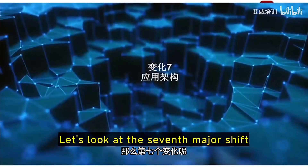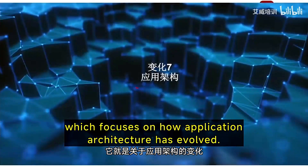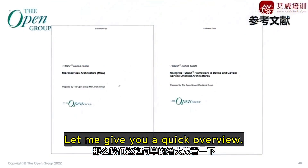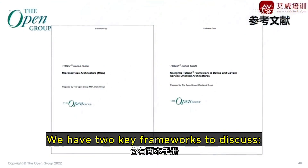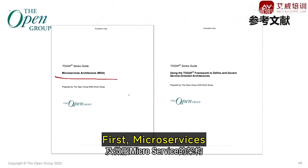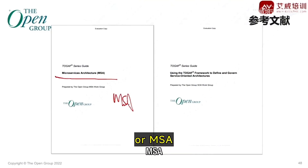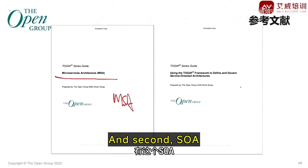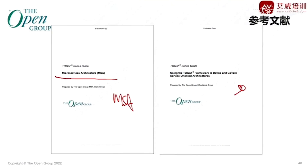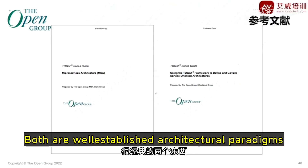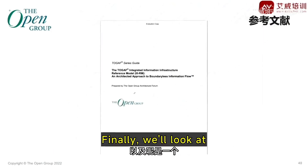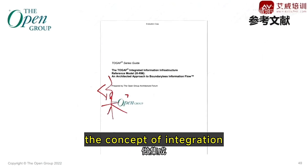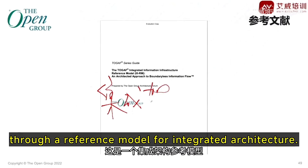Let's look at the seventh major shift, which focuses on how application architecture has evolved. We have two key frameworks to discuss: first, microservices (MPC), and second, SOA. Both are well-established architectural paradigms. Finally, we'll look at the concept of integration through a reference model for integrated architecture.